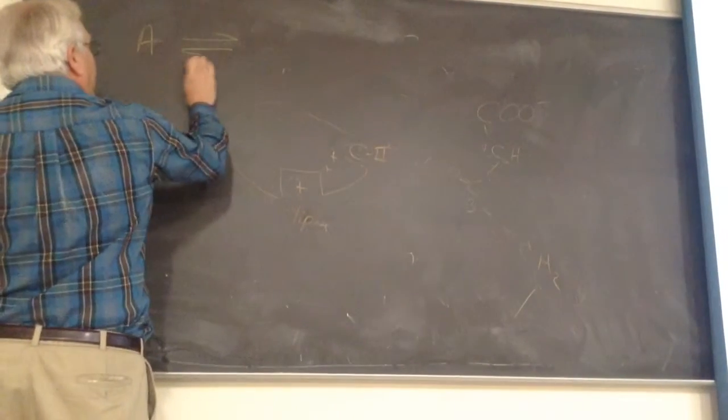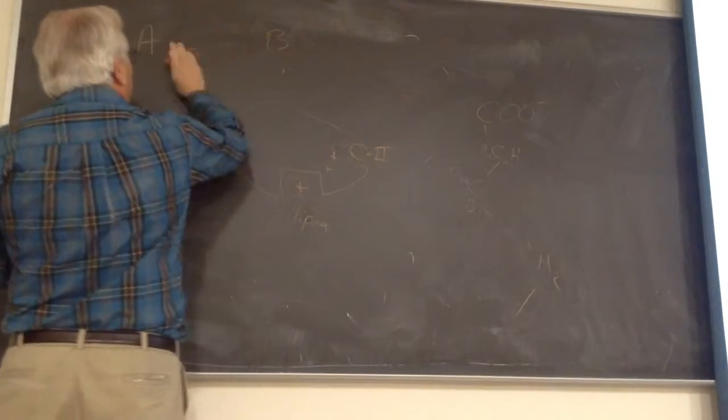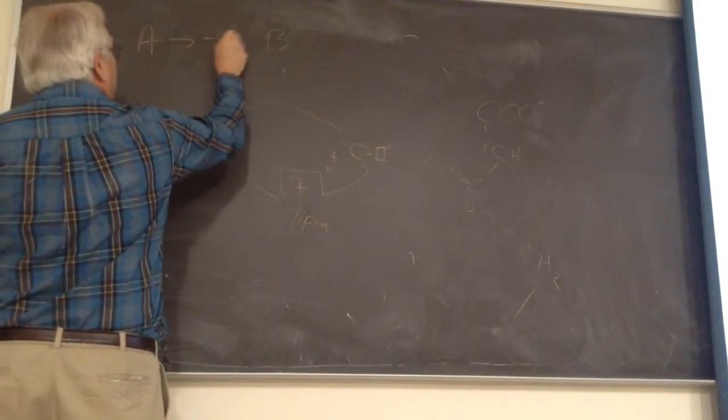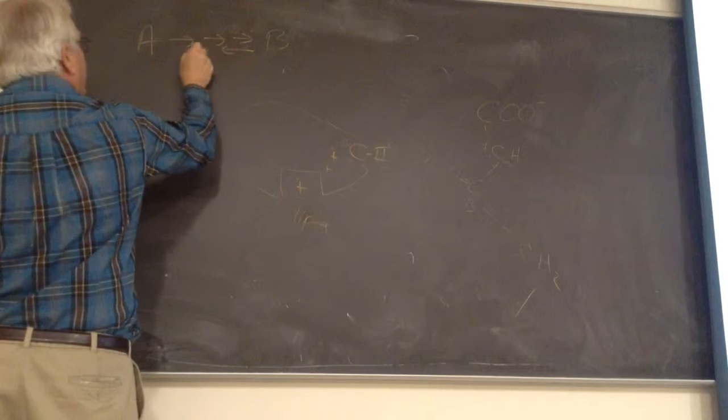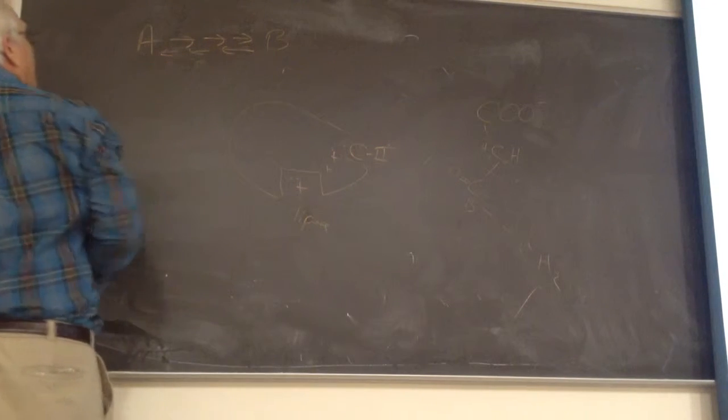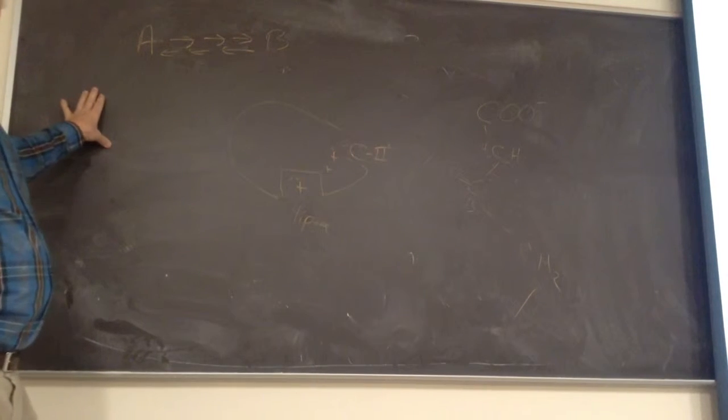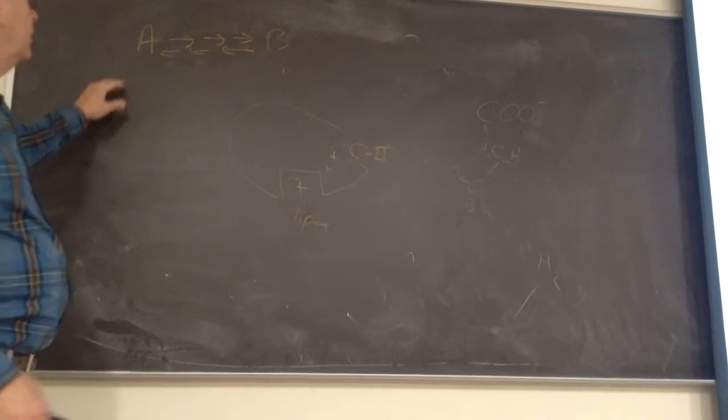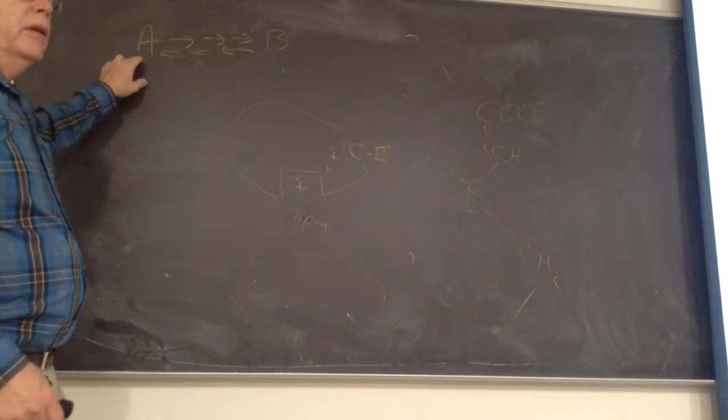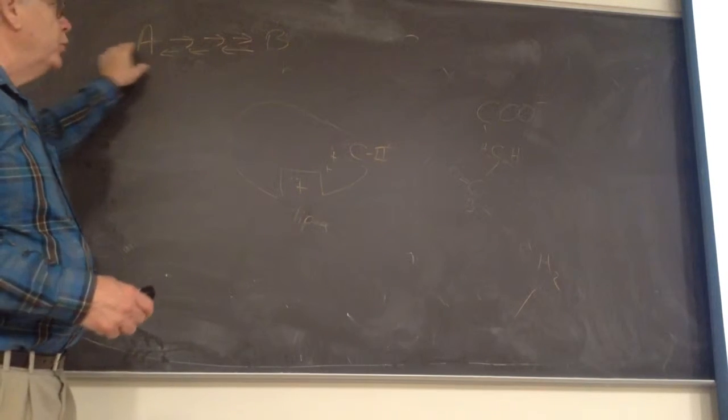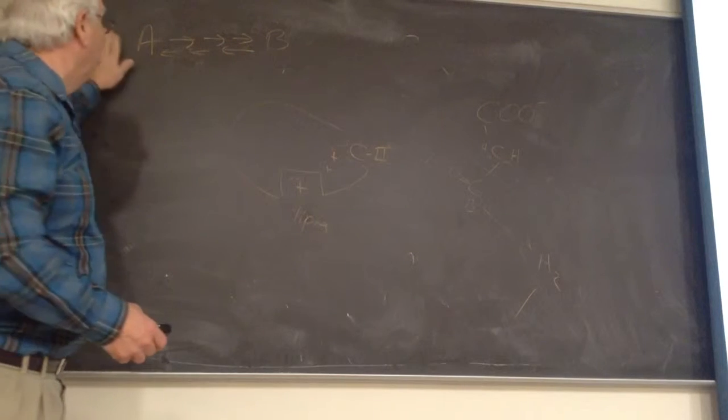So that's kind of a generality for pathways. Let's make this multi-step. Connecting any two points in metabolism, the cell has to decide which way it wants to go. Both sides should be favorable.